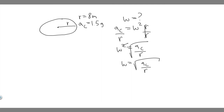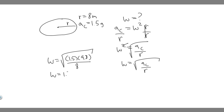Now we just plug in the values. The centripetal acceleration is 1.5 times g, where g is 9.8 or 9.81. So omega equals the square root of 1.5 times 9.8 divided by the radius of 8 meters. When you compute 1.5 times 9.8 divided by 8, you get omega equal to approximately 1.3555 radians per second.